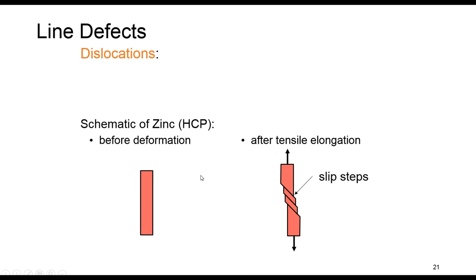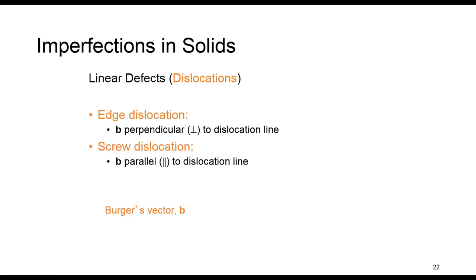Here is a schematic of zinc carbide, which has hexagonal close-packed structure before deformation, and then after tensile elongation, you see slip steps. Basically, linear defects or dislocations are one-dimensional defects around which atoms are misaligned. So this happens when some atoms are misaligned.